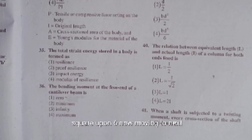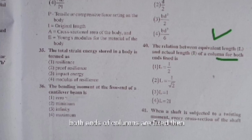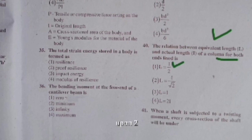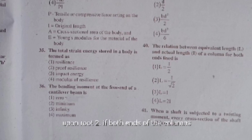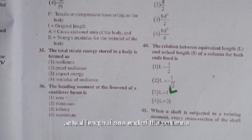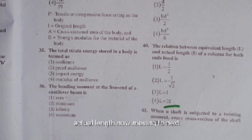The relation between equivalent length and actual length of columns: if both ends are fixed, Le = L/2; if one end is fixed and the other hinged, Le = L/√2; if both ends are hinged, Le = L; if one end is fixed and the other is free, Le = 2L.